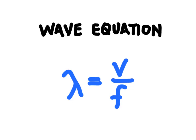In this video we're going to learn about the wave equation and how it's used to solve a problem. This equation is used to find wavelength — that's what this symbol represents right here, it's a Greek letter lambda. And we use the speed of a wave, or velocity of the wave, and the frequency of the wave.